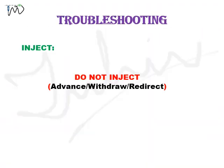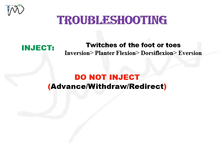Coming to the troubleshooting or needle manipulation: you can go ahead with the injection if you are able to demonstrate twitches of the foot or toes. As already mentioned, dorsiflexion or eversion is also acceptable in proximal sciatic nerve block. Do not inject if you encounter the following: if in contact with the femur, withdraw the needle and redirect it posteriorly or inferiorly. If there is no stimulation response following insertion at a reasonable depth, withdraw and go slightly superiorly or anteriorly.